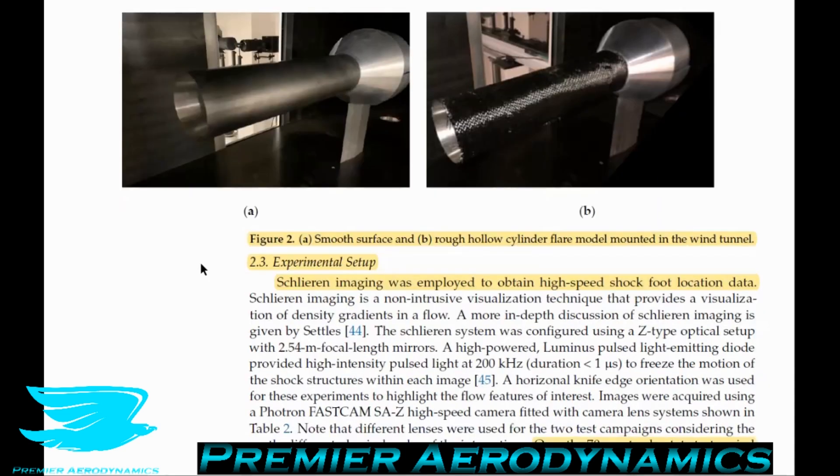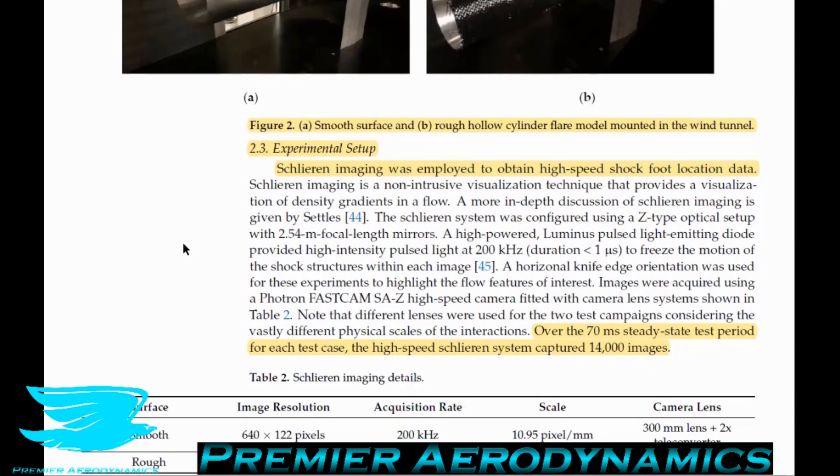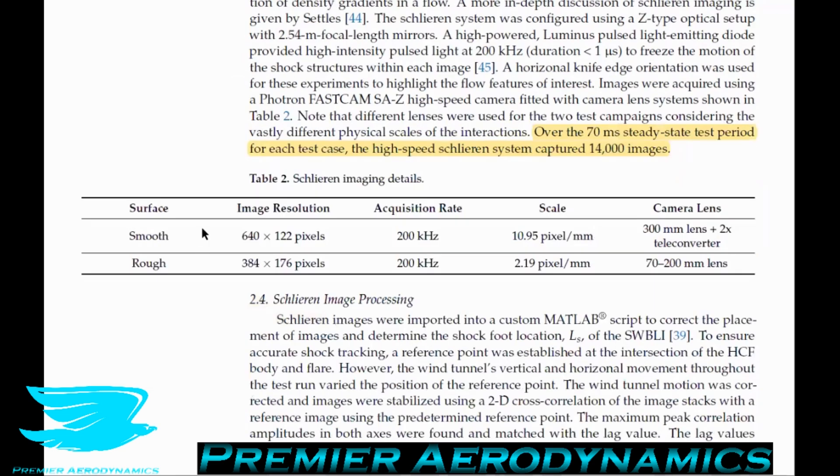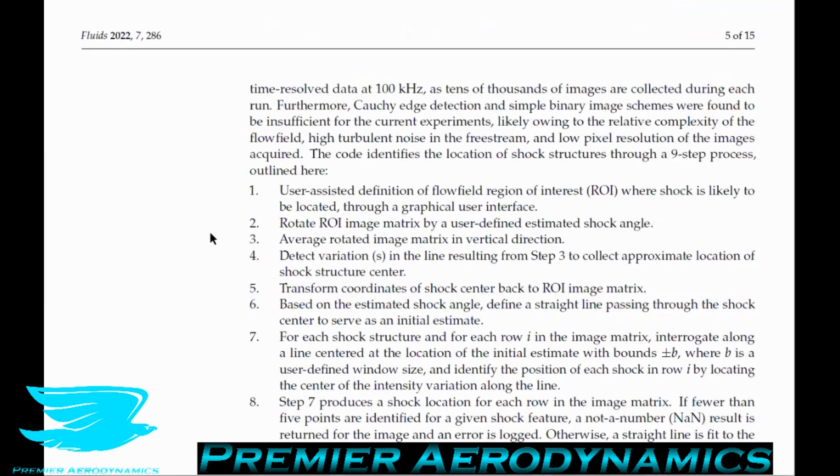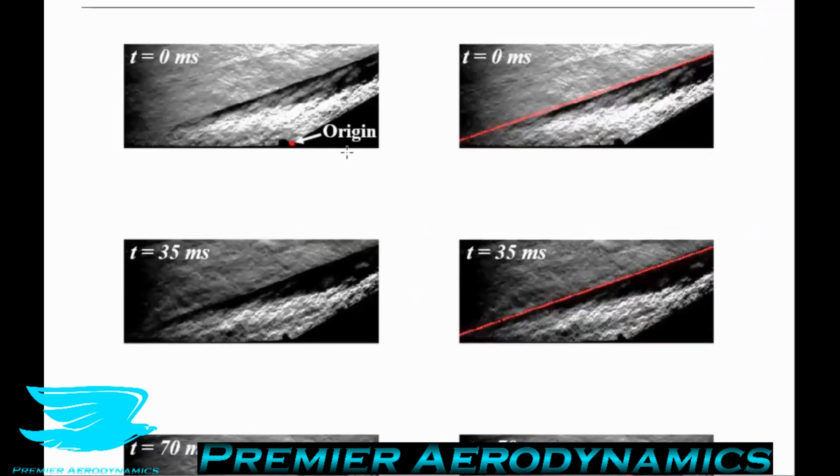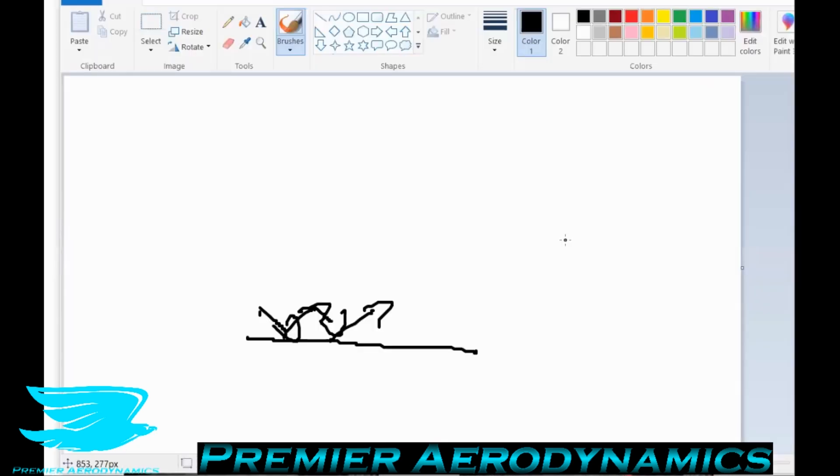Let's talk about the experimental setup. Schlieren imaging was employed to obtain high-speed shock foot location data. Over the 70 millisecond steady-state test period for each case, the high-speed Schlieren system captured up to 14,000 images, which is amazing. So let's talk about what Schlieren is before we go any further. Schlieren imaging is a little bit hard to draw, but I'll do my best. Let's say you have an object or whatever in the flow, let's say a cylinder, and you have flow going over. Let's look at it from the side on. So let's say you have the cylinder and the flow is going into the page.